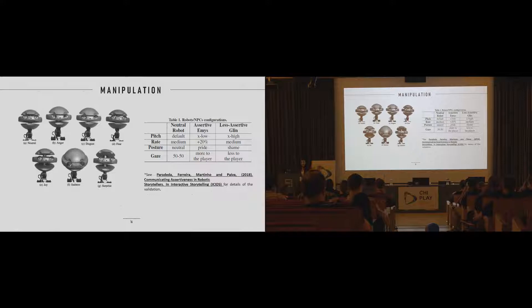Here is our manipulation, it was pre-validated in a previous study. We manipulated factors related to the pitch, the rate of the speech, the posture of the robot and the gaze of the robot. We used EMI's robots. You can see here an image of the same robot displaying different facial emotions that were used throughout the game to emphasize the verbal utterances of the robot.